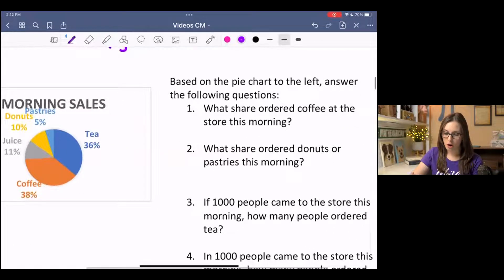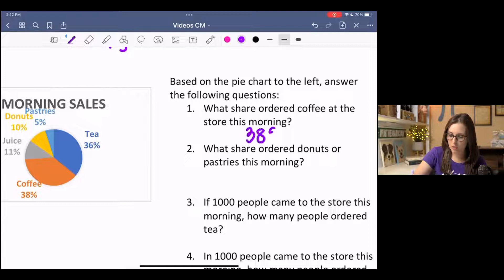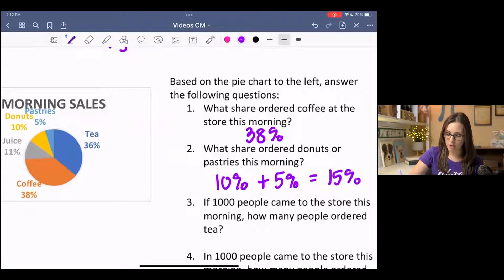What share ordered coffee at the store this morning? We're not saying how many people ordered coffee. We're saying what percentage ordered coffee. And we can see from the pie chart that 38% of the people who entered the store got coffee. What share ordered donuts or pastries? So we look at donuts or pastries, and that's 15% of the pie chart.